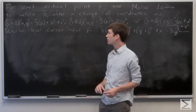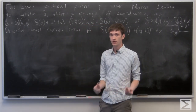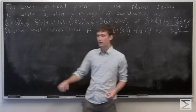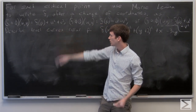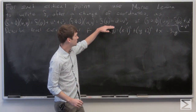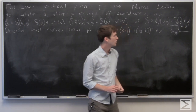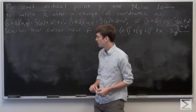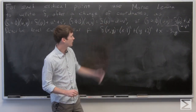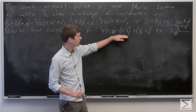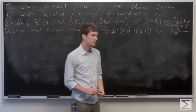In this problem, we're asked to use Morse Lemma to write f, after a change of coordinates, in one of the following three forms: f(p) plus u squared plus v squared; f(p) minus u squared minus v squared; or f(p) plus u squared minus v squared. We're also asked to describe what the level curves are like near p. We're given that f(x, y) equals the quantity (x minus 1) squared plus the quantity (y plus 2) squared plus x minus 3y.